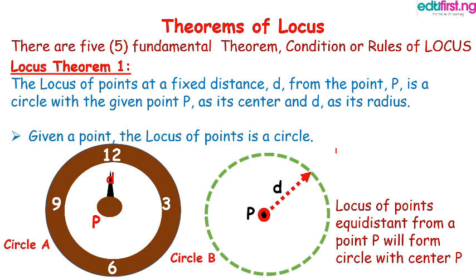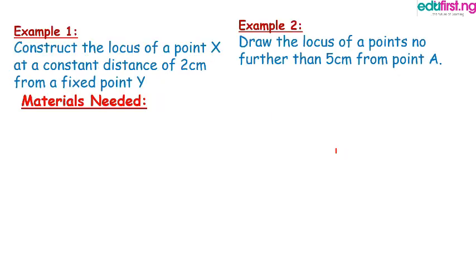Let's solve some problems and examples on locus that are related to Theory 1. Example 1 says: Construct the locus of point X at a constant distance of 2 centimeters from fixed point Y. Example 2: Draw the locus of a point no further than 5 centimeters from point A.